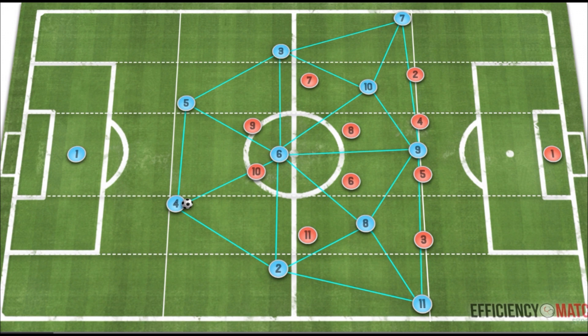As we can see, each player is connected via their first line passing options to the closest player, to create the triangles we often see in football. With this, we can start to talk about what this means and how the players are connected to each other.